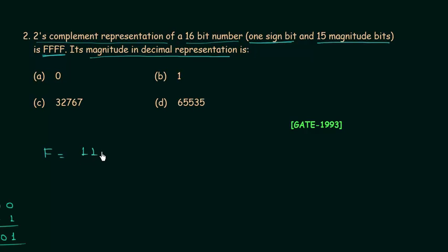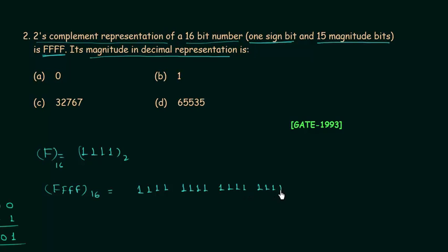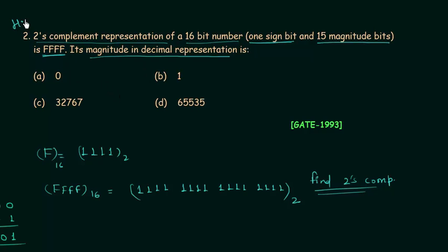F is 1111 in binary, so FFFF in hexadecimal equals four groups of 1111, giving us a 16-bit number of all 1's. The hint to solve this problem is: find the 2's complement of this binary number, then convert it to decimal. This is a homework problem — I have given you the hint, so try to solve it and post the correct option in the comment section.